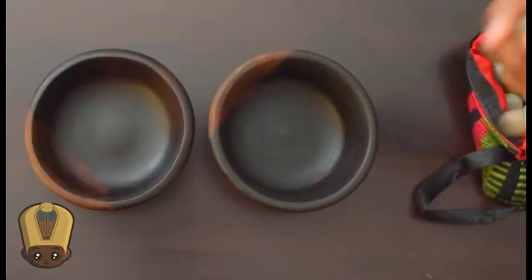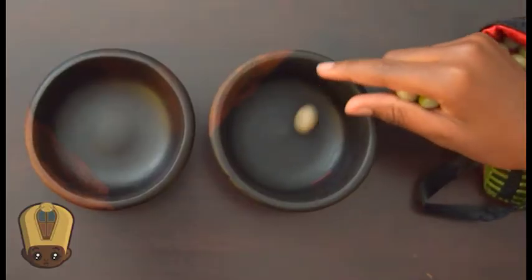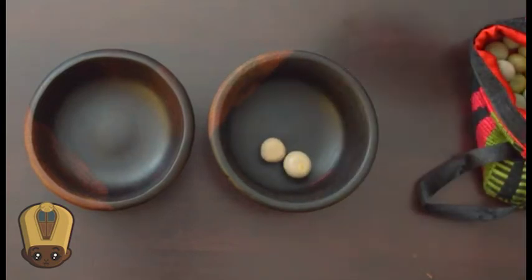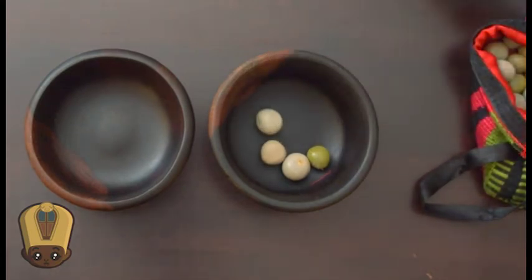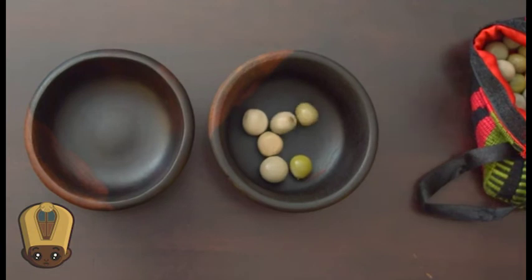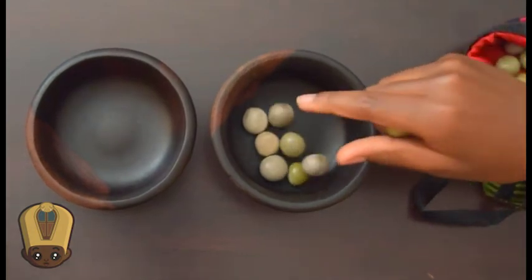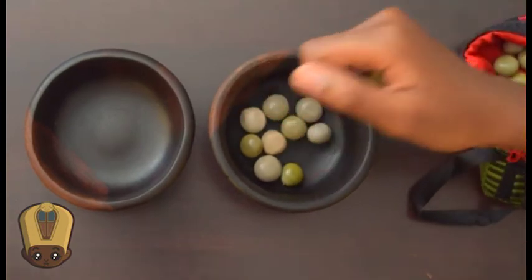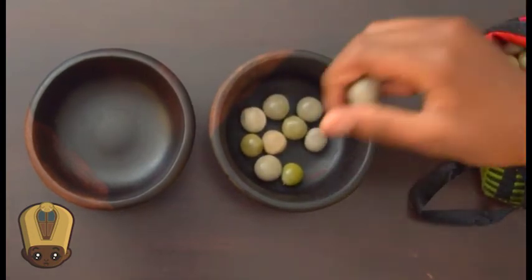Now we're going to count to thirty by ones. One, two, three, four, five, six, seven, eight, nine, ten.